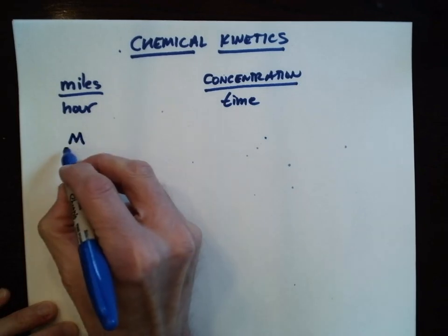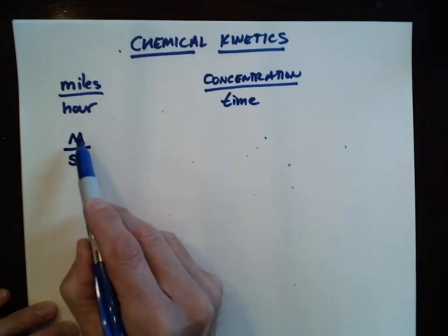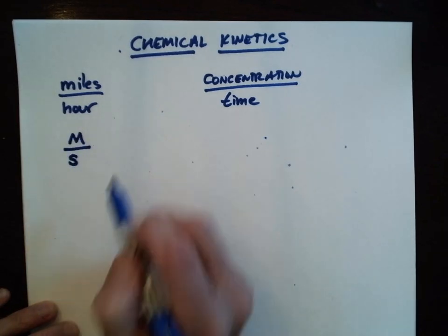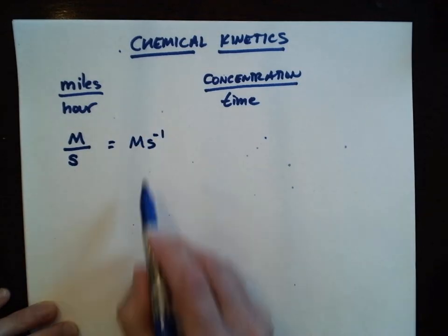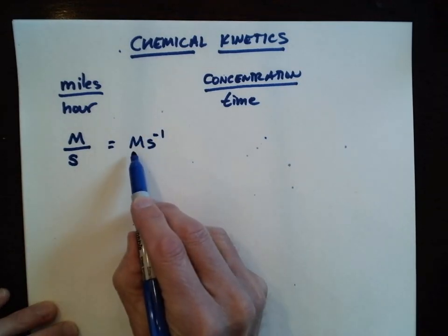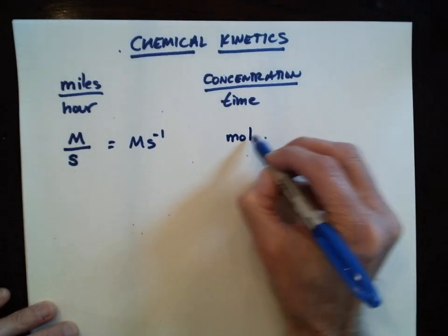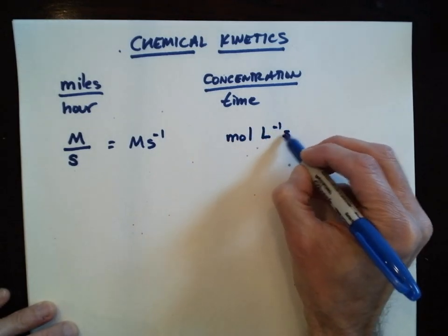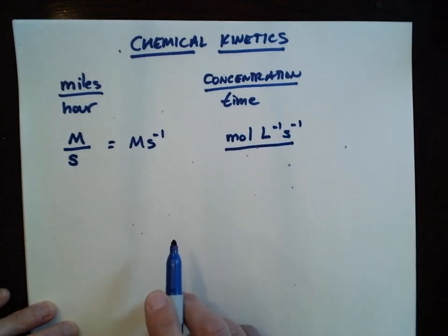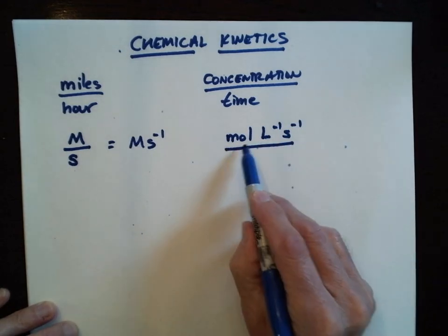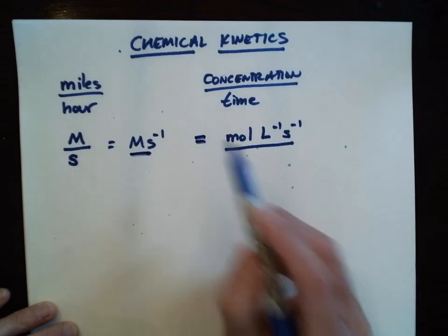So the unit for measuring how fast a chemical reaction goes is molar per second. And because the unit of molarity is mole per liter, we can also write the rate as mole per liter per second — which is the same thing as molar per second.